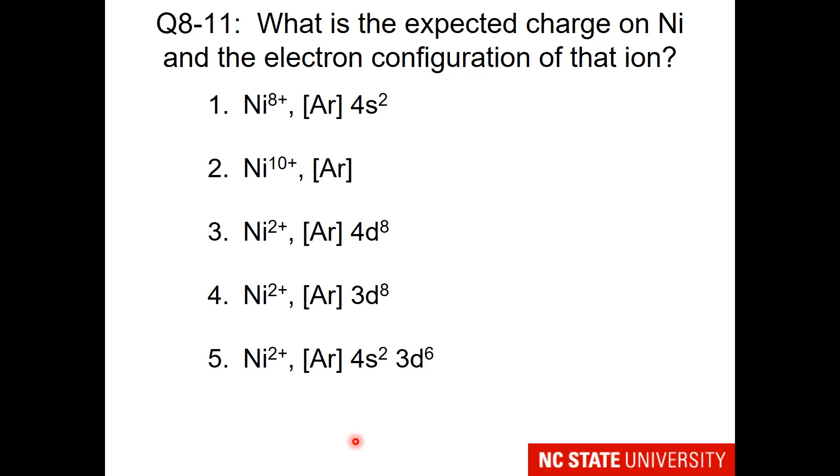For this one I'm going to help you a little bit. Removing the first electron requires some energy. Removing a second electron to get to a plus 2 charge requires even more energy. A great deal of energy is required to remove 8 electrons.